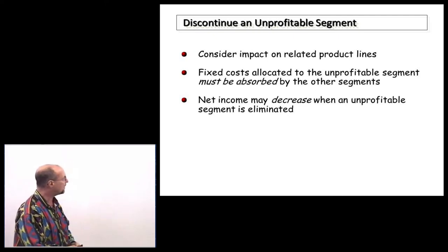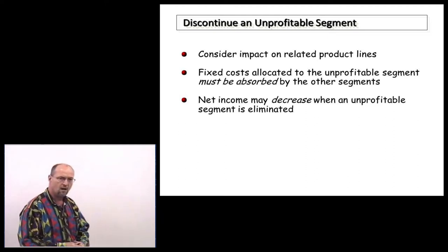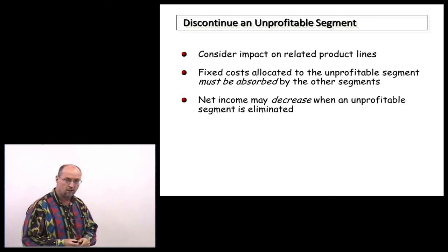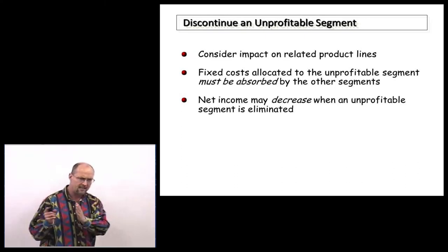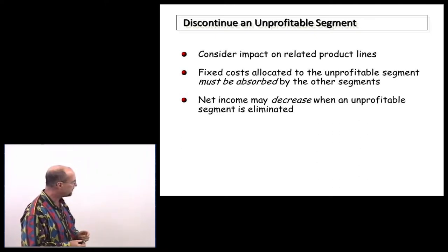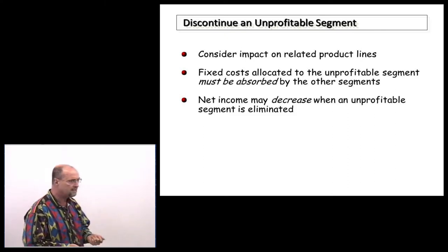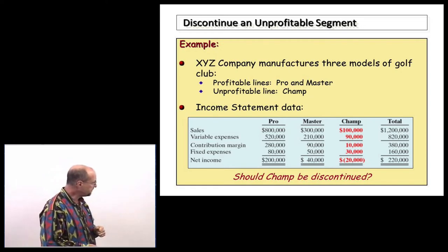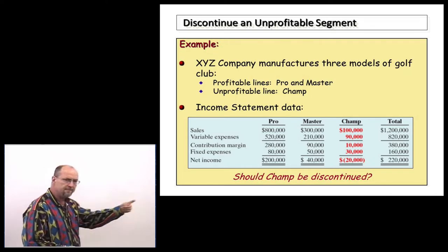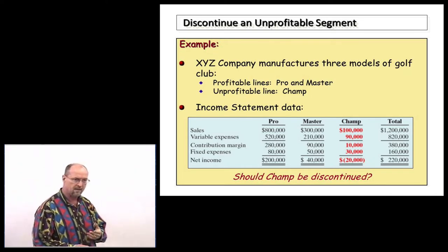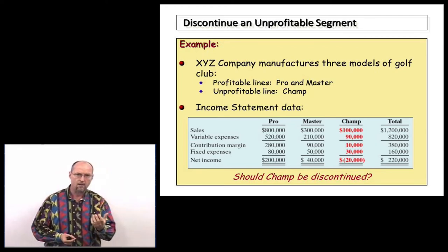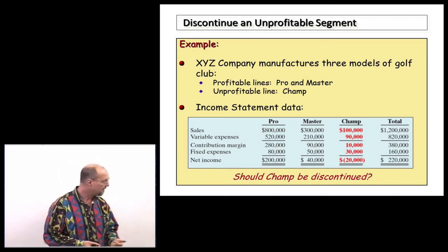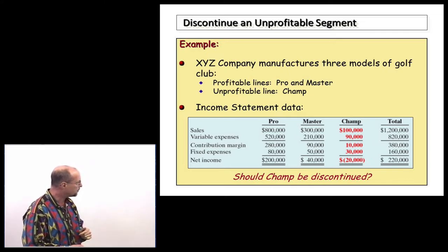Should we discontinue an unprofitable part of our business? We have to consider the impact on existing product lines. In many cases, fixed costs charged to the unprofitable segment aren't going to go away — they'll be allocated to existing products. We may find that net income actually goes down when we eliminate an unprofitable segment. This company makes three types of golf clubs, and the Champ line is losing money. Here we revisit contribution margin: sales minus variable costs, which covers fixed costs and then contributes to profitability. The Champ line has a $10,000 contribution margin that would go away.